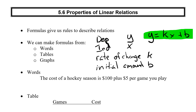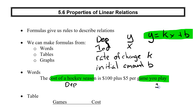Looking at the question, the cost of a hockey season is going to be one variable, and the number of games you play is going to be the second variable. Usually the first variable listed will be my dependent, and my second variable will be my independent. Now my k and my b are going to be numbers. The k is the rate of change — the thing that happens over and over again, it's my multiplier. So $5 per game is the multiplier, since every single game I play I'm going to be charged $5 extra. My initial amount — the amount I have to pay just to be part of the team — is $100.